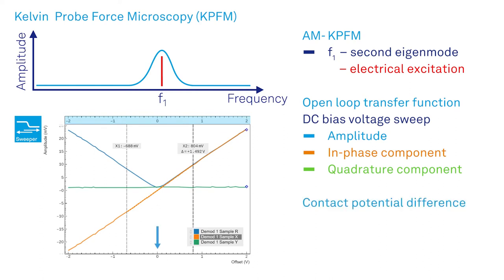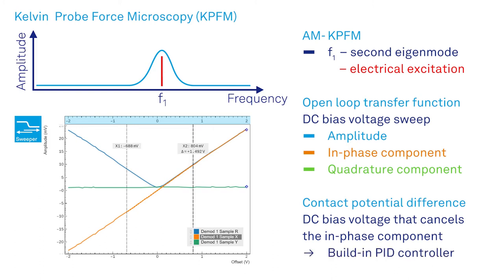To measure the contact potential difference, we have to apply the correct DC bias voltage to cancel this component. Thanks to the linearity of the in-phase component, we configure one of the built-in PID controllers to do this.